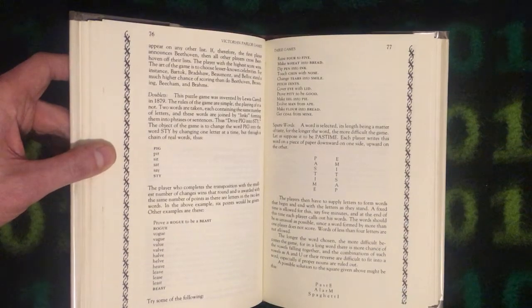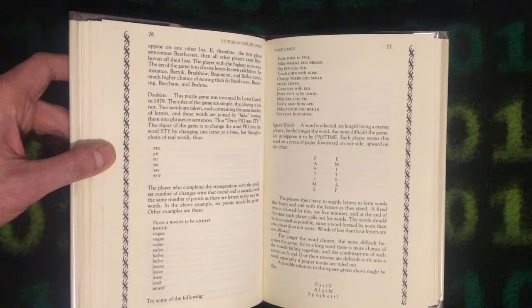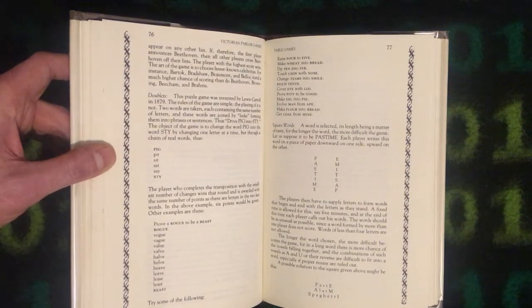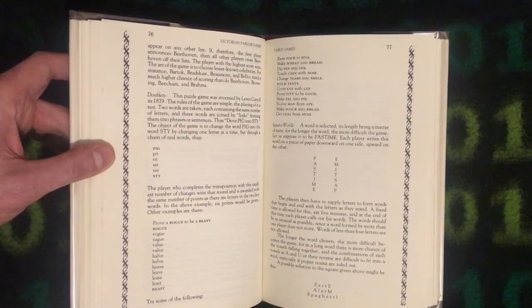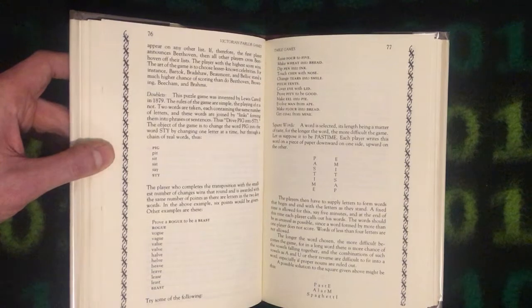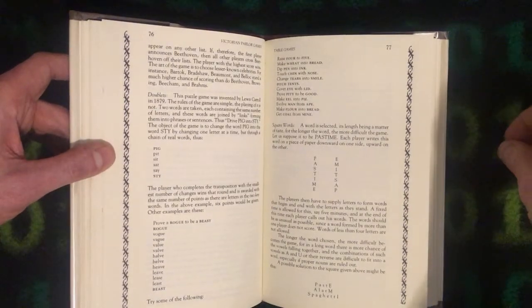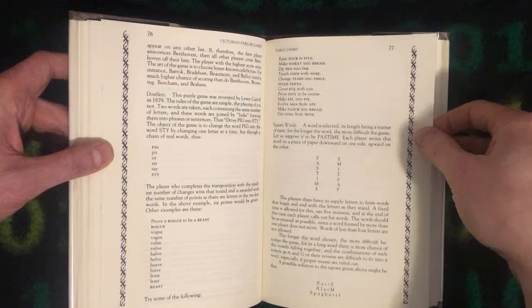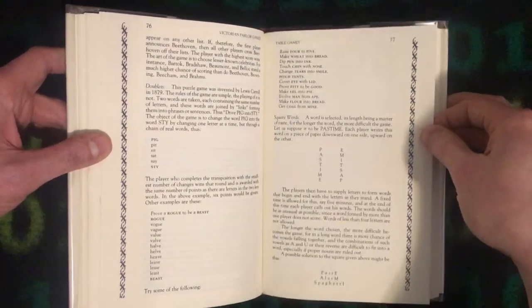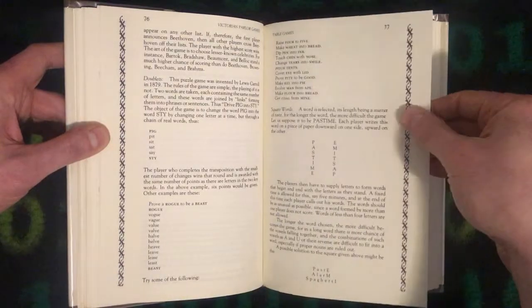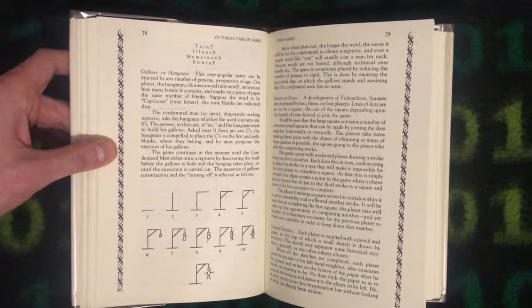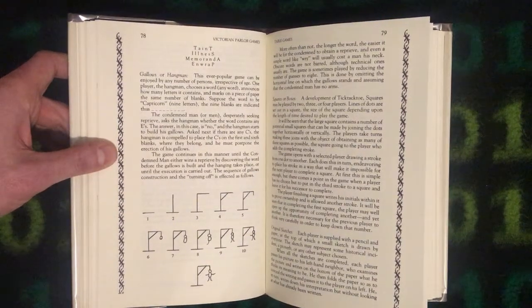In a long word there is more chance of the vowels falling together, and the combinations of such vowels as A and U or their reverse are difficult to fit into a word, especially if proper nouns are ruled out. A possible solution to the square given above might be this: paste, alarm, spaghetti, taint, illness, memoranda, enrap.